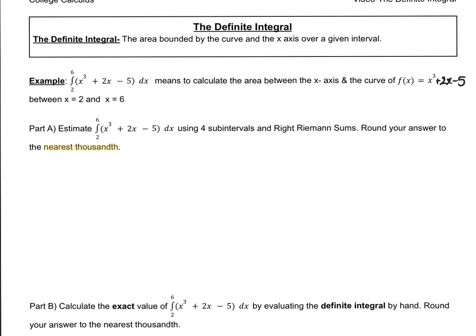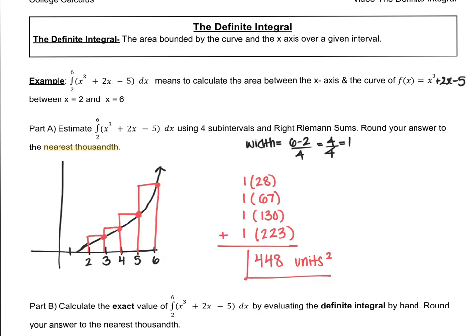All right, this is what I got. 448 units squared. So as you can tell with the picture, this is a huge over-approximation because there's a lot of spaces above the curve.